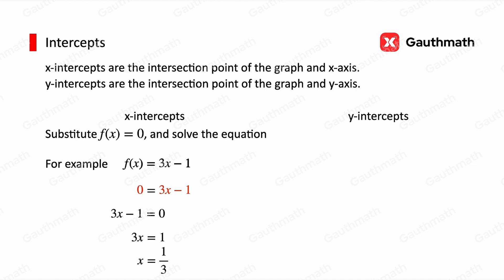To find y-intercepts, we simply substitute x = 0. So f(0) = 3(0) - 1 = -1.